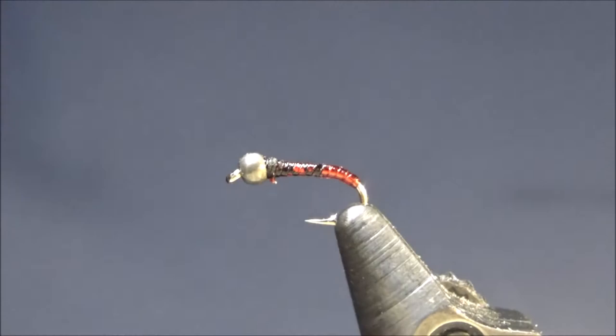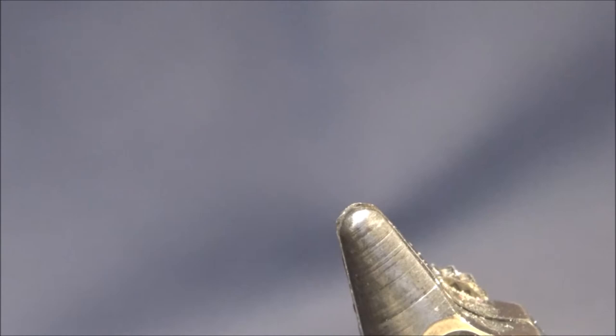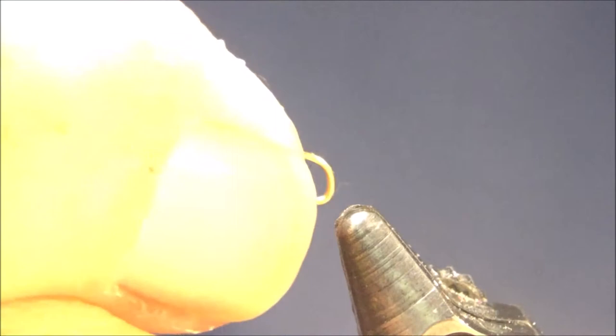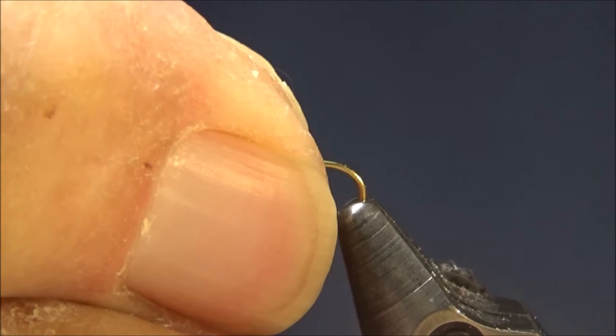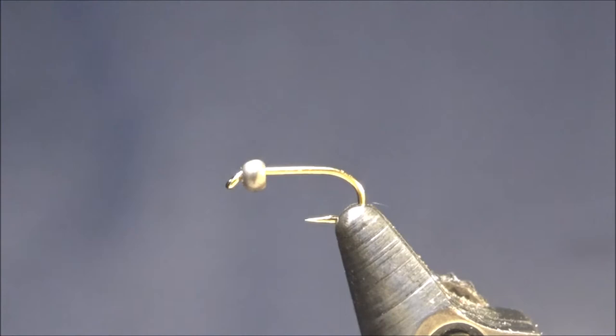I'm going to be tying this using a Daiichi 060 hook in size 18. I tie it in size 18 and 20s. For the bead, I have a tungsten bead, and this is a 5/64 in natural. I'm going to be using some Veevus thread in black. This happens to be 12/0. 8/0 or smaller would work fine.